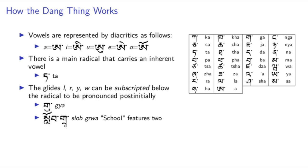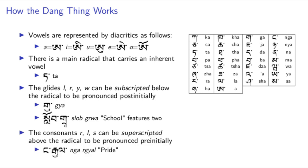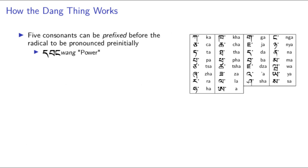There is some contention as to whether they may be initial in certain situations. Note that it is possible for wa to be subscripted after another consonant to have a potential total of two glides, or a glide accompanied by labialization. For example, the word for school is slob-gra. The more sonorous sounds ra, la, and sa can be superscripted to be pronounced right before the main consonant, for example in gar-gyal. Five characters — ga, ba, da, ma, and the vocalic onset — can be prefixed, for example in dbong, meaning 'power.'